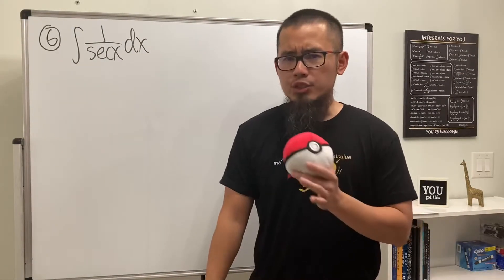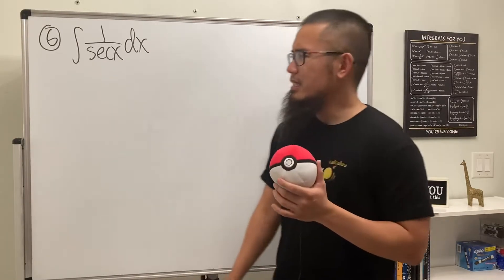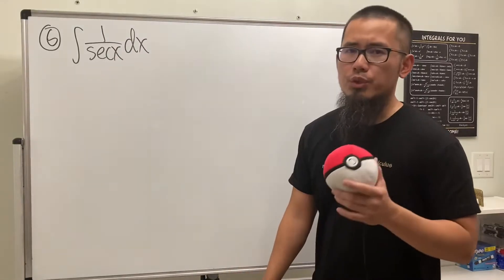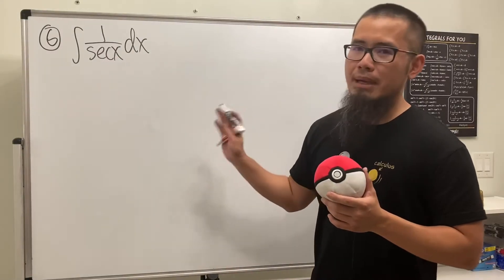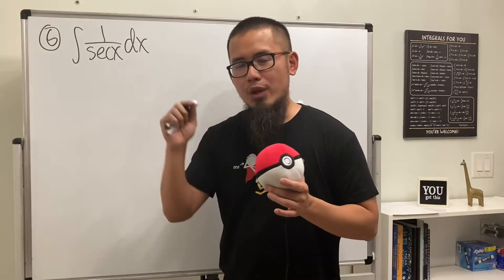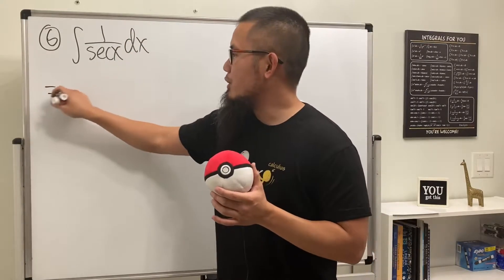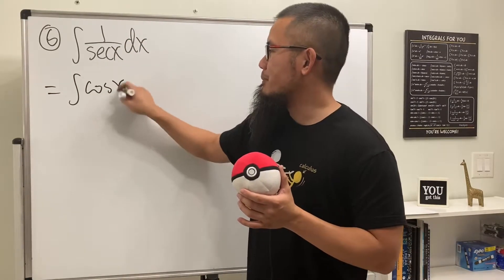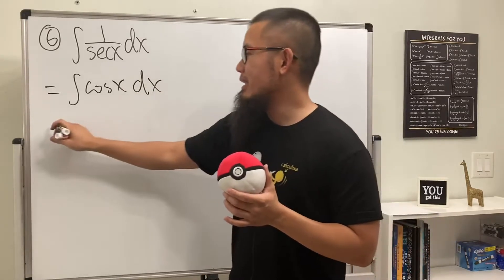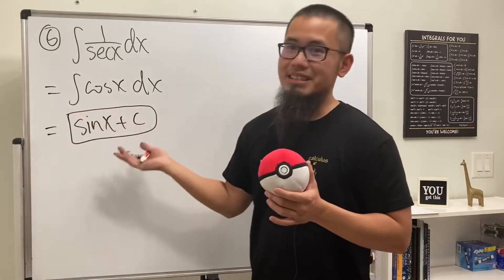Number 6 is the integral of 1 over secant x. Since secant equals 1 over cosine, we have 1 over secant x equals cosine x. So this integral is just the integral of cosine x, which gives us sine x plus C.